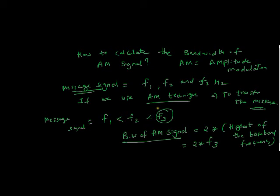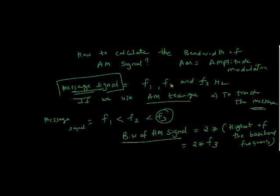To summarize what we have learnt: suppose my message signal has a collection of various frequencies — f1, f2, and f3 hertz — and I use amplitude modulation technique to transmit the signals from one place to another. What should be my minimum bandwidth of the AM signal? That is calculated as 2 times the highest of the base band frequency. This is my base band signal with frequencies f1, f2, f3, and the highest of them is f3 where f1 less than f2 less than f3. So the bandwidth of my AM signal will be twice the highest frequency in the message signal.